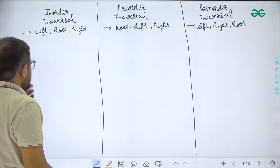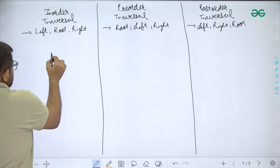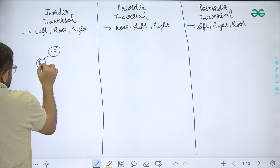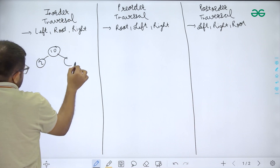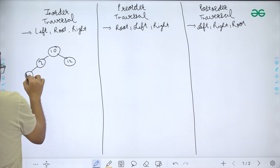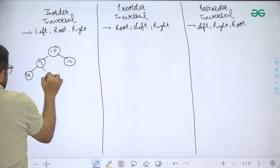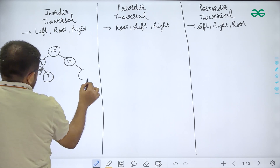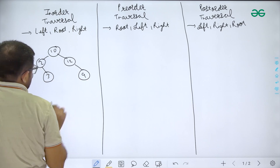Let me take an example of a binary tree. Let's say the nodes have values 10, 2, 12, 14, 3, and 9.